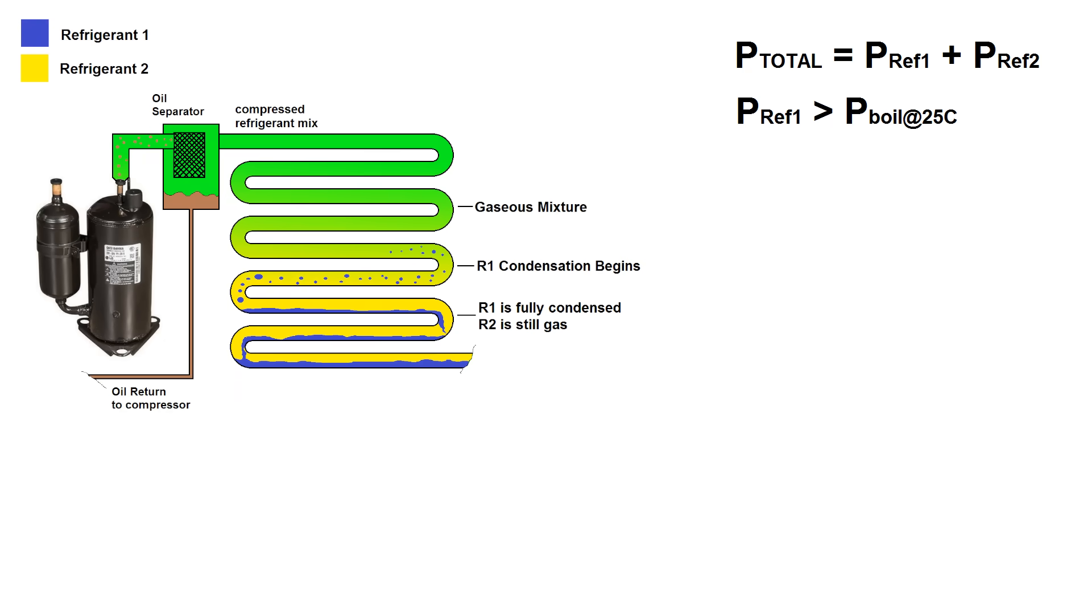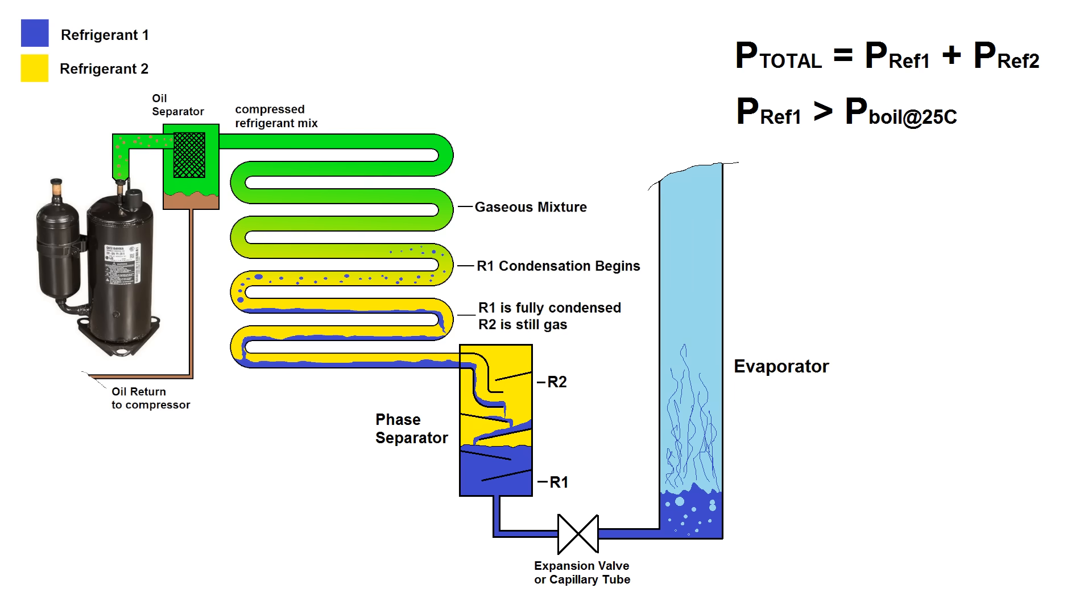Now here's where things get interesting. The gas liquid mixture flows into a chamber called a phase separator that uses gravity and some baffles to separate the gas from the liquid by letting the liquid fall to the bottom and the gas rise to the top. Since the first refrigerant has already condensed to liquid, but the second refrigerant is still gas, this pretty much completely separates the two refrigerants. The liquefied refrigerant one goes into an expansion valve or capillary tube. Its pressure drops, it boils in an evaporator, then returns to the compressor inlet, just like with a regular vapor compression system.